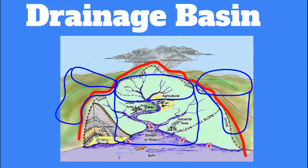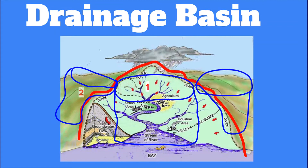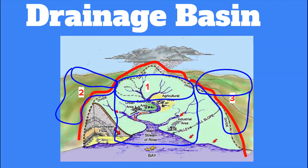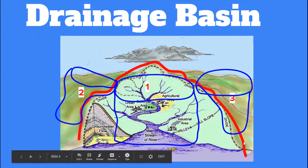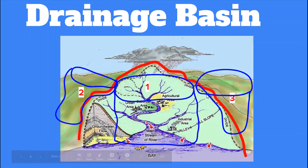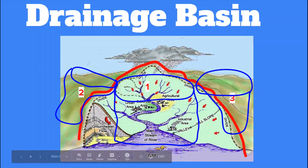So in this diagram, we have one, two, and three separate drainage basins. At the top of the bowl, or where we have our red line here, where the water can run off into another drainage basin, we would call that area our watershed. In this diagram, it is labeled as our divide.